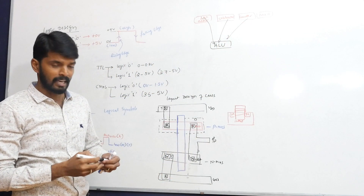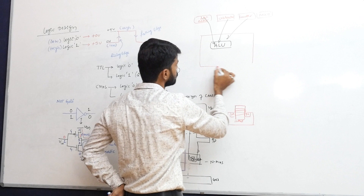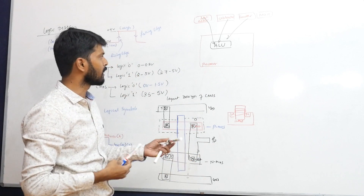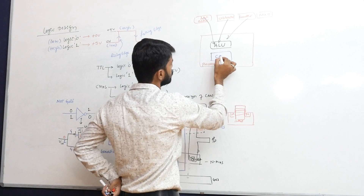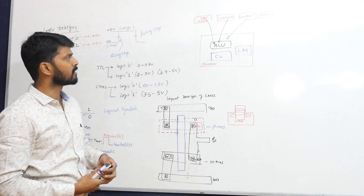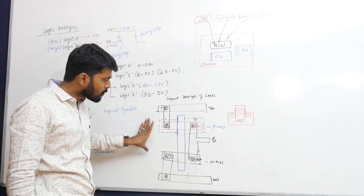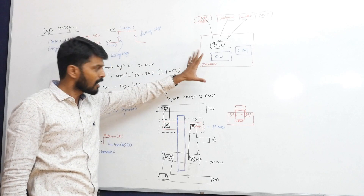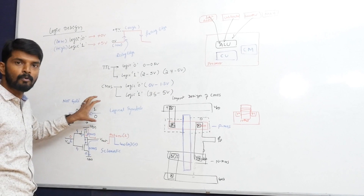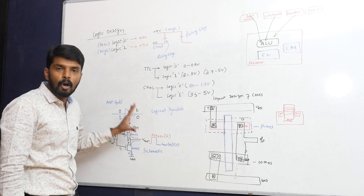The ALU sits inside the processor. The processor contains not only the ALU but also a control unit and cache memory. This entire system is designed using integrated circuits, and inside those ICs it is the layout design that is actually implemented — not the schematic or logical symbol. The logical symbol is only for our understanding and is not the actual physical implementation.